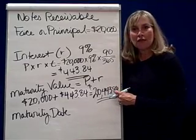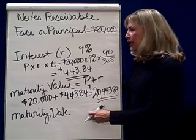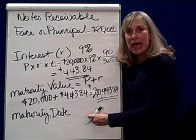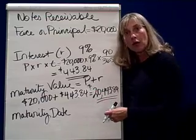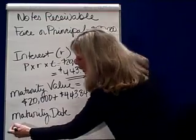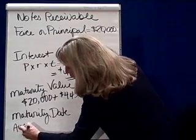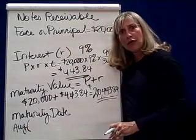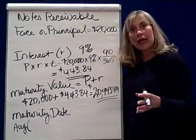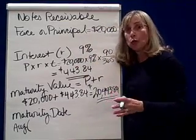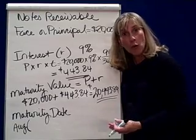Now we need to figure out the due date. The maturity date is 90 days after you borrowed it in August. How many days are in August? Well, 30 days has September, April, June, and November. All the rest have 31.